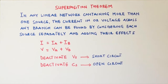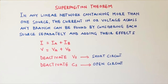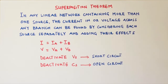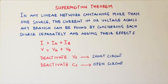Hello guys, welcome back to this channel. This is Kansas City Academy and in today's video we are going to talk about the superposition theorem. This theorem states that in any linear network containing more than one source, the current in or voltage across any branch can be found by considering each source separately and adding their effects.